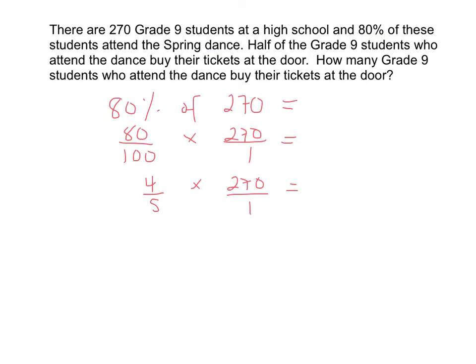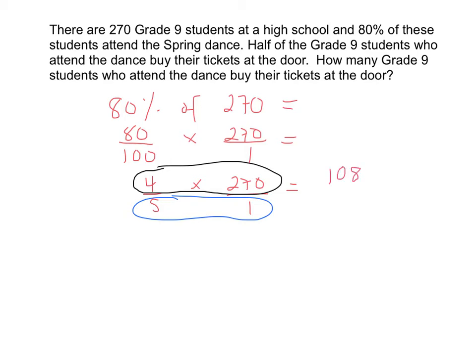So let's rewrite our multiplication sentence using our fraction in lowest terms. 4 over 5 times 270 over 1 is equal to something. When multiplying fractions, we multiply the numerator by the numerator and then the denominator by the denominator. So let's start: 4 times 270 gives us 1,080. Next, we multiply 5 times 1, which is 5.